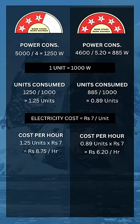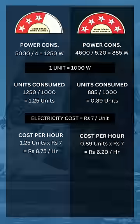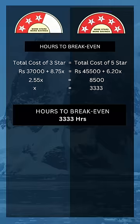Ab electricity cost को ₹7 per unit मान लेते हैं। The 3 star AC will cost you ₹8.75 per hour while the 5 star AC would cost you ₹6.2 per hour. Formula लगा कर break even hours निकल के आते हैं 3,333 — which means 3,333 hours के बाद दोनों ACs की cost same हो जाएगी। So if you plan to run the AC for...